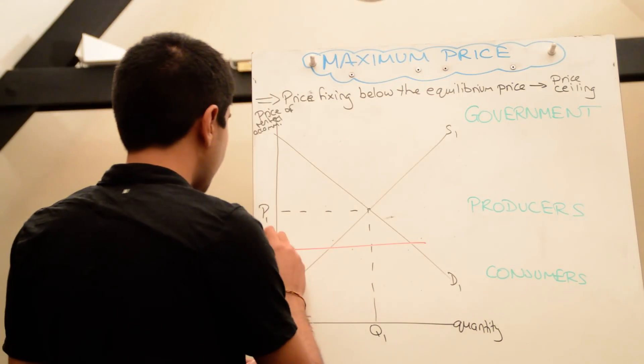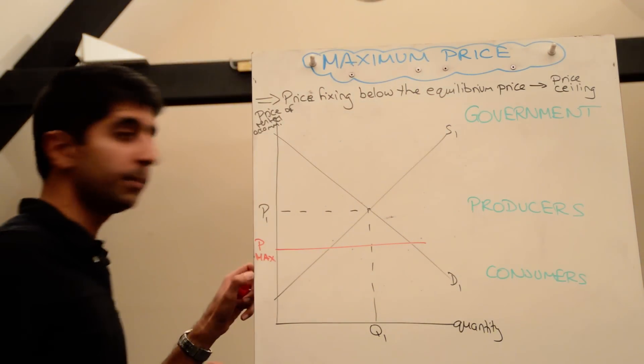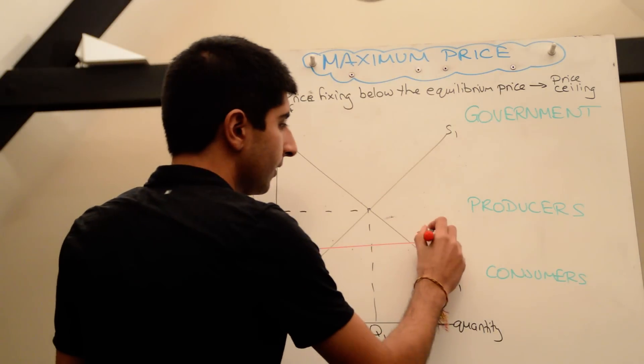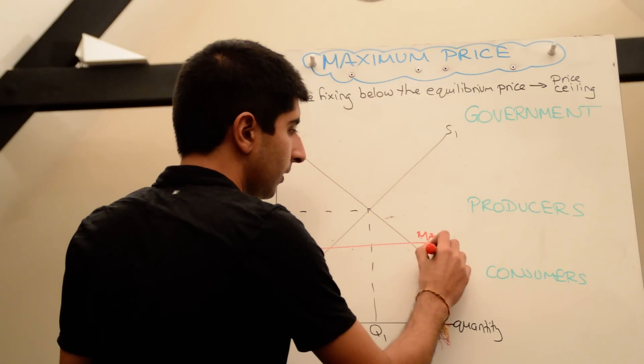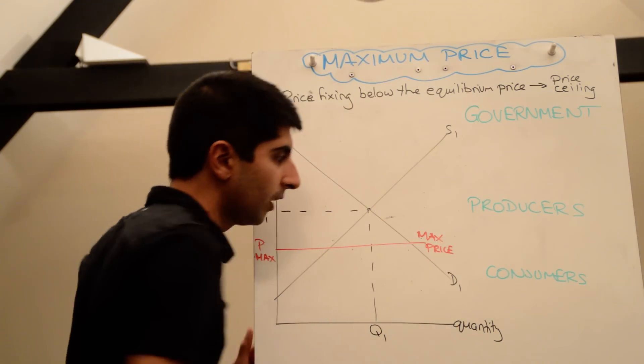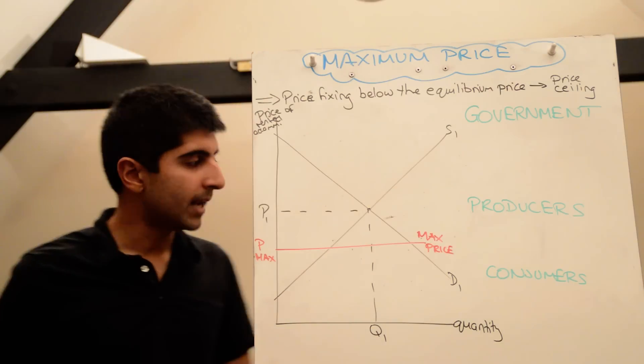So maybe that is the maximum price for rented accommodation. Call it Pmax, and that is the max price. Now let's analyze the effects of that in the market.